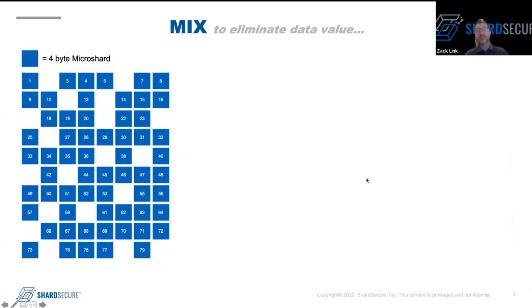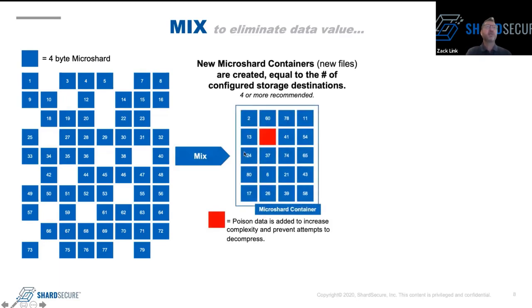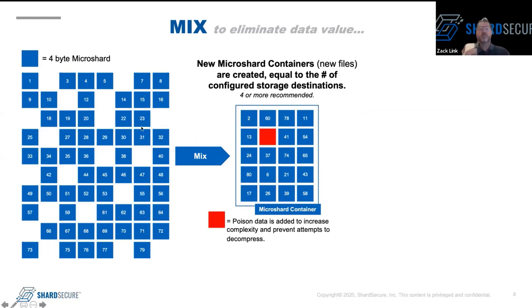After shredding the data, we mix it to eliminate any value. We create new micro shard containers — think of them as files — and we create as many as you have storage locations configured; in this example, four. Any piece of data that took up four micro shards can be guaranteed to have each of those micro shards in a separate container, and those shards are not sequential — they're randomly distributed. You'll also notice the poison data: we inject a very small amount, usually under 1%, which makes it really hard to reassemble the file. You would have to get all the micro shard containers together, figure out how to unmix and reorder the data, and then remove the poison data before even decompressing the file.